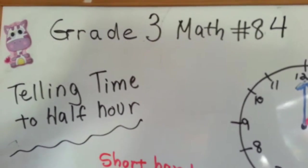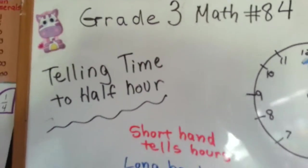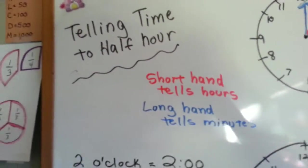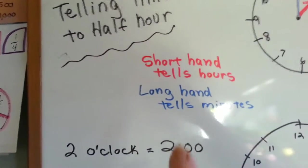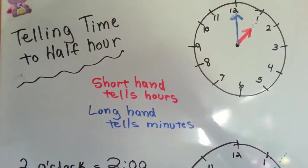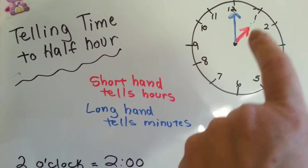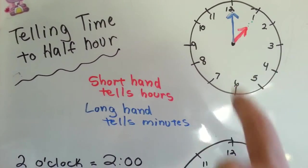Grade 3 math number 84, telling time to the half hour. If you watched our previous video, we started talking about telling time. There are two hands on a clock: a short one and a long one. The short one points to the hour, and the long one points to the minutes.